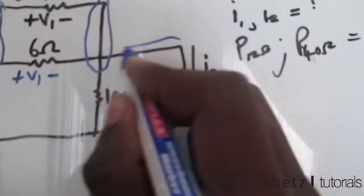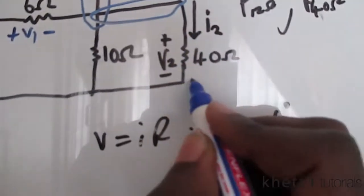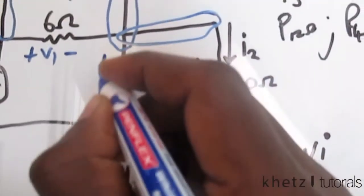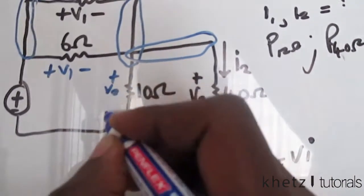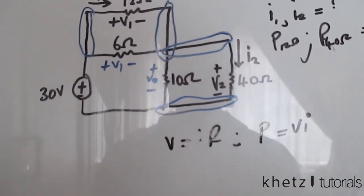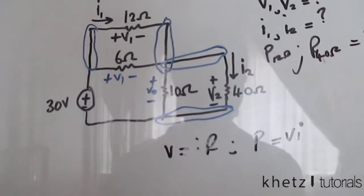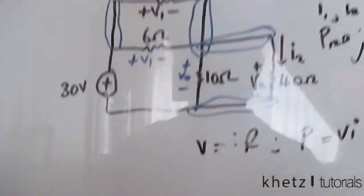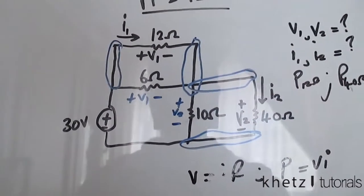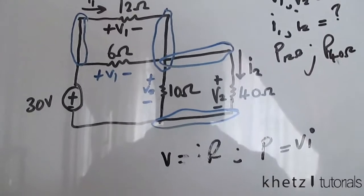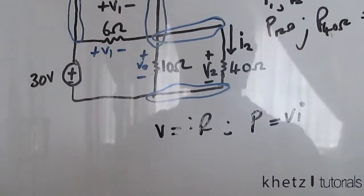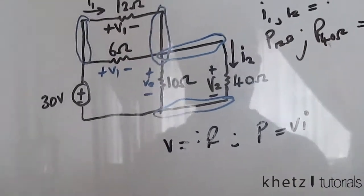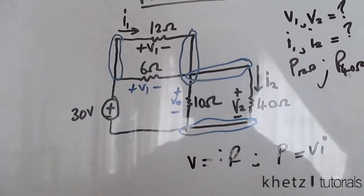Similarly, these two nodes are shared between the other two resistors, so that voltage is also v2. To solve the problem, I'm going to combine these two parallel resistors into one equivalent resistor, and these two into another, then apply voltage division to find the individual voltages.